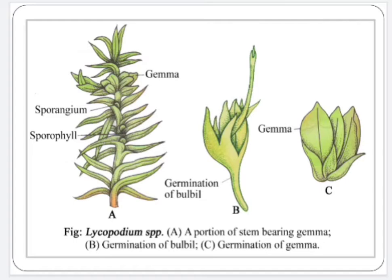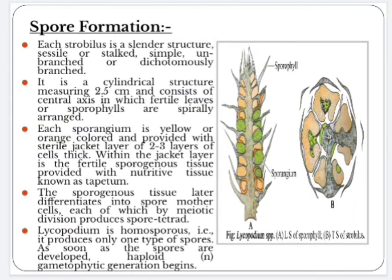Let us see the diagram showing various vegetative modes of reproduction. Spore formation: in Lycopodium, spores are formed in a specialized reproductive structure known as a strobilus or cone.